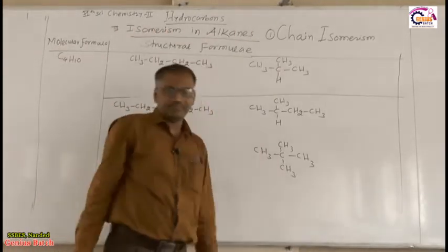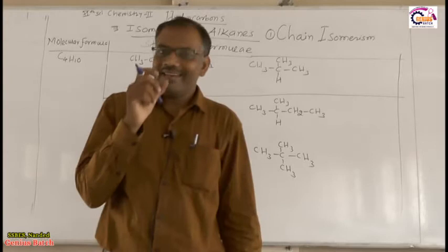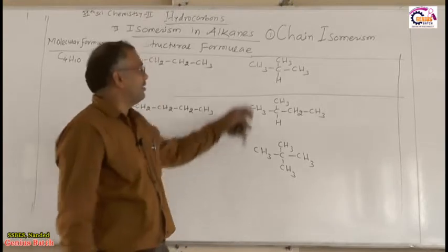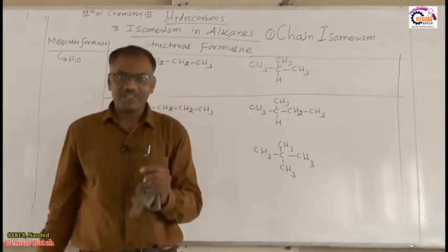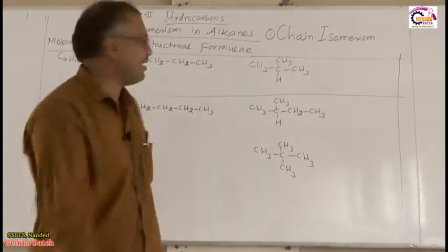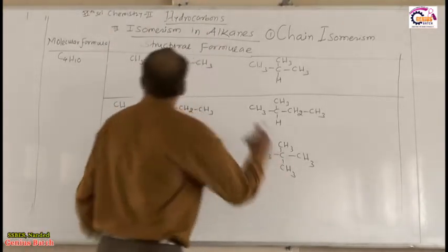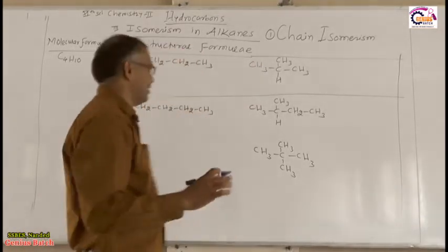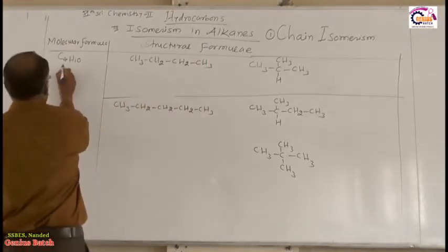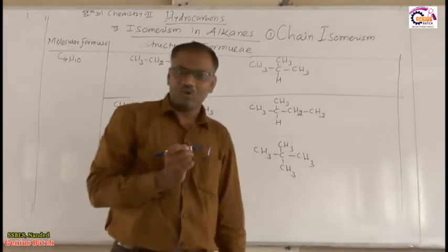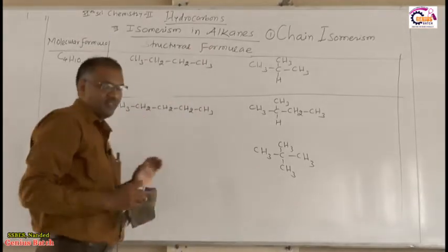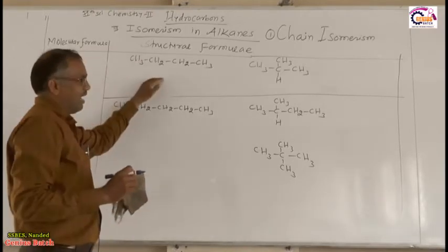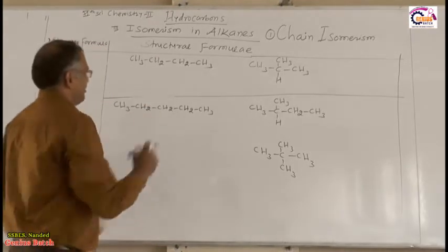We have to specify what type of isomerism is exhibited by alkanes. Alkanes exhibit basically chain isomerism. What is meant by chain isomerism and what are their examples? Let us take the compound having molecular formula C4H10. We can write two structures for this molecular formula.